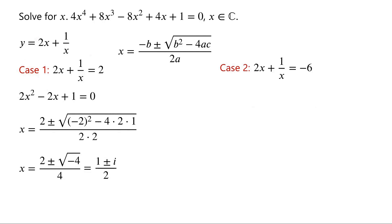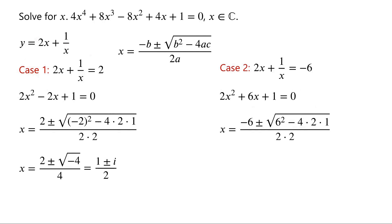For case 2, multiply the equation by x and rearrange. We have 2x squared plus 6x plus 1 equals zero. Again, this is a quadratic equation. With a equals 2, b equals 6, and c equals 1, we get x equals negative 6 plus or minus root of (6 squared minus 4 times 2 times 1), over 2 times 2. Since 6 squared minus 8 equals 28, and root of 28 equals 2 root 7, x equals (negative 3 plus or minus root 7) over 2.